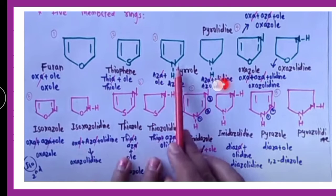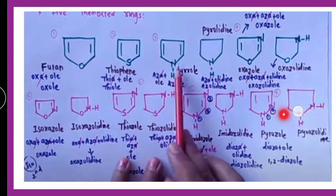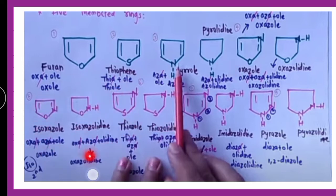All of these are 5-membered rings: furan, thiophene, pyrrole, then oxazole/oxazolidine, pyrrolidine, isoxazole/isoxazolidine, thiazole/thiazolidine, imidazole/imidazolidine, pyrazole/pyrazolidine, and so on.